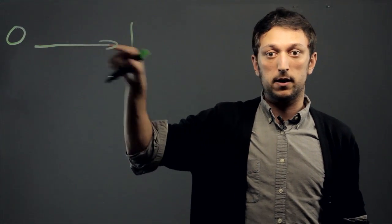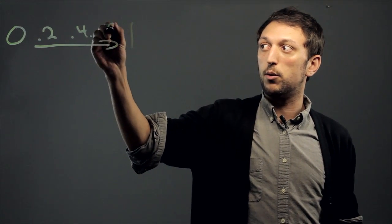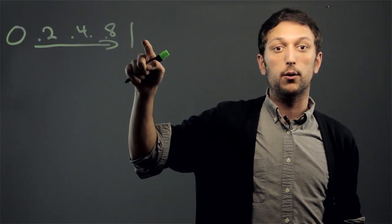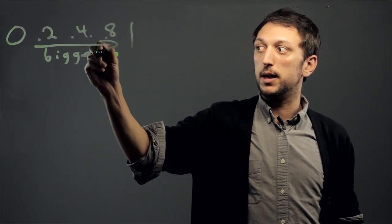The first rule is with positive decimals. You start at zero and as you go towards one, everything is getting bigger. So point two, point four, point eight, all are getting bigger as they go towards one. So it's always, the bigger it looks, the bigger it is.